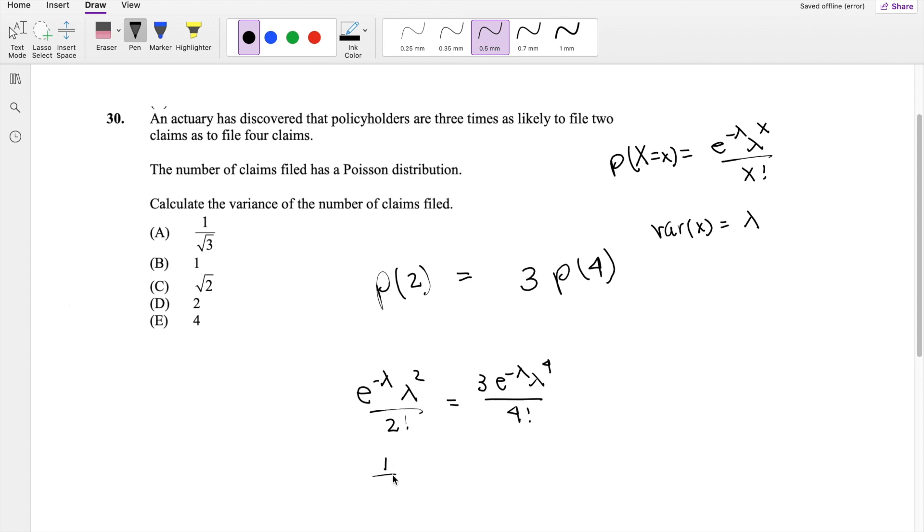So on this side, you get one-half e to the negative lambda, lambda squared, is equal to three over four factorial, which is 24, e to the negative lambda, lambda to the four.